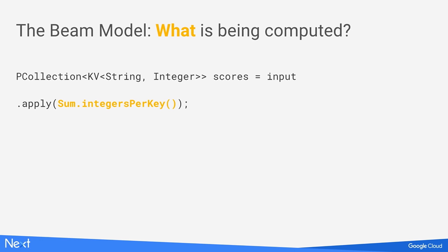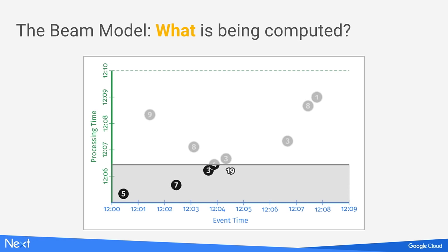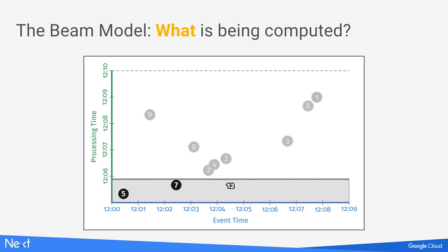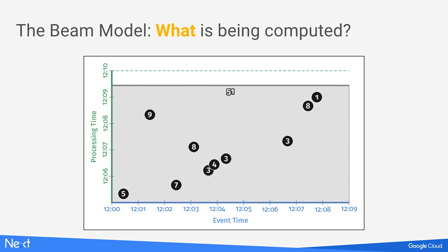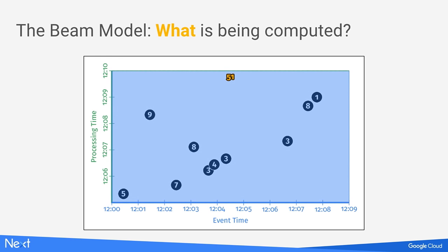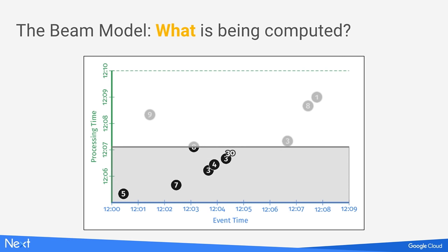We'll build a simple pipeline to calculate hourly scores for teams in our mobile game. In this code snippet, we've already parsed data into key-value form — team name and points scored. In yellow, you can see the 'what' question: we're summing integers per key, per team, to get the total score. Running this in a standard batch algorithm, elements accumulate into intermediate state, and when processing completes the result is emitted — aggregating everything regardless of event time.